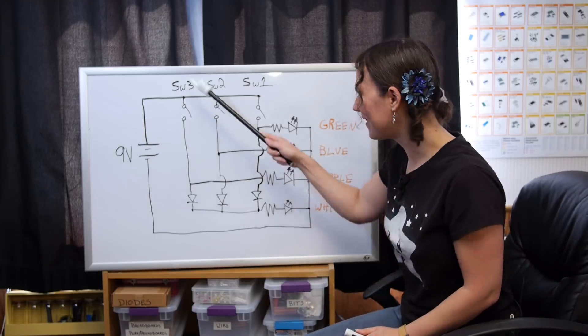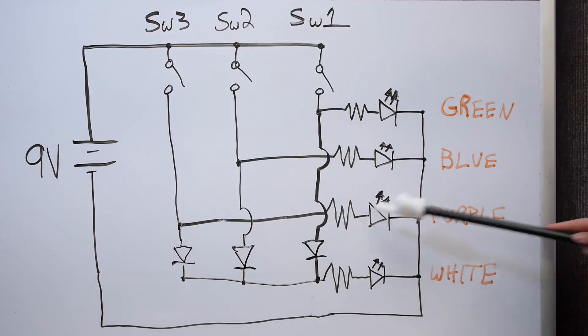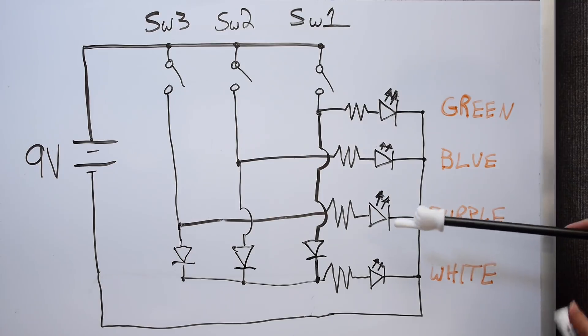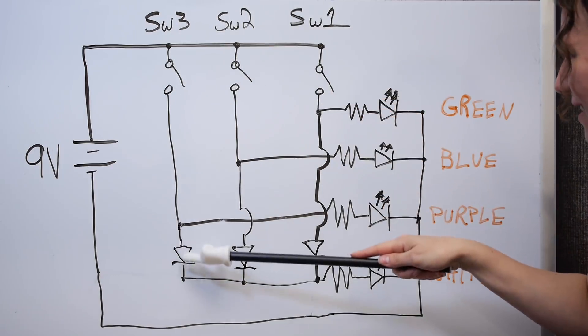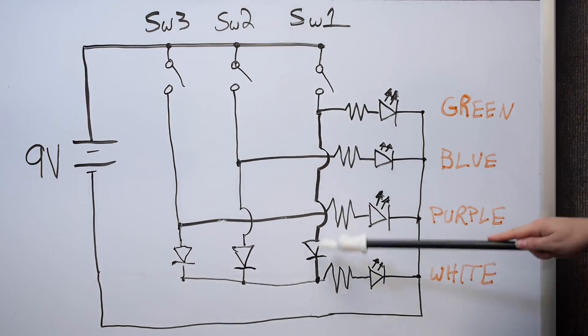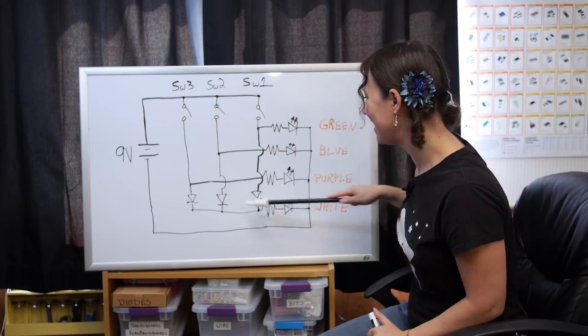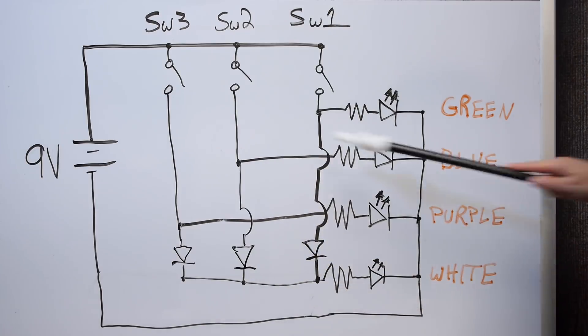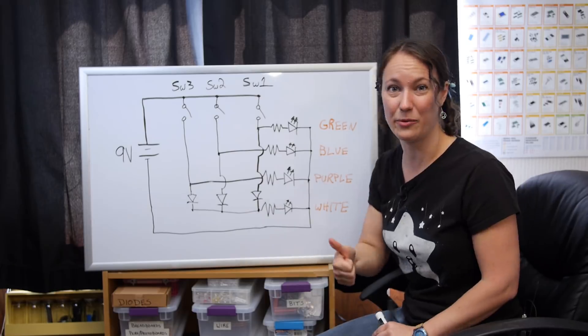Let's check switch three. Switch three is on. Comes down. Goes over to purple. Turns it on. Good. Goes down here. Through the diode. Over here to the white LED. Turns it on. Can it get back up to green? No, it can't because this diode stops it. Can't get back up to blue here because this diode stops it. I think we're good.